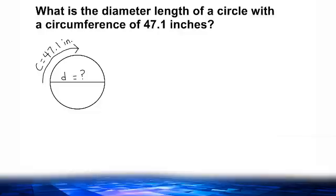Sometimes, you may be asked to figure out what the diameter or radius length is of a given circle when the circumference is provided. In this case, they want you to figure out what is the diameter length of a circle with a circumference of 47.1 inches.